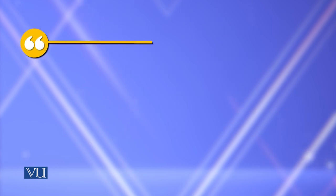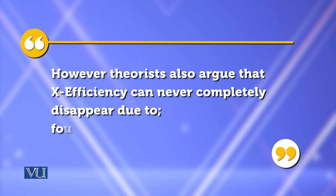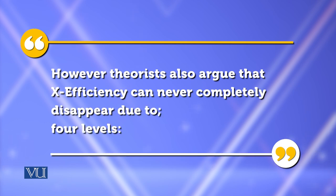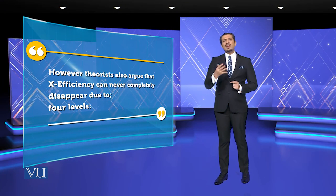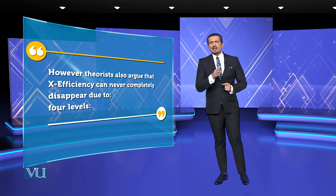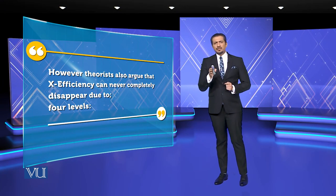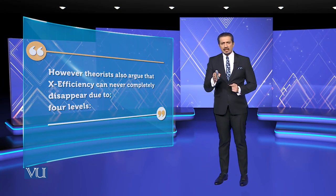However, the theorists argued that X-efficiency never completely disappeared due to 4 or 5 levels. We will discuss these 5 levels.